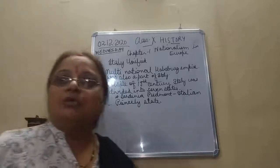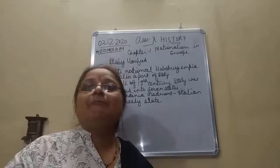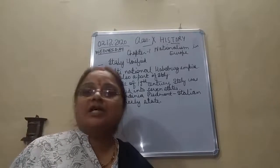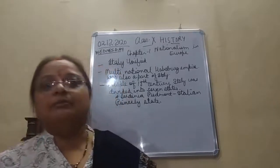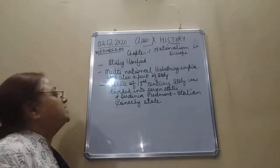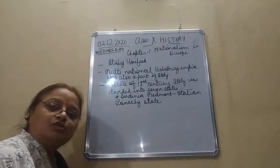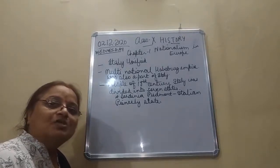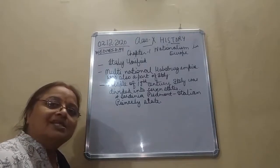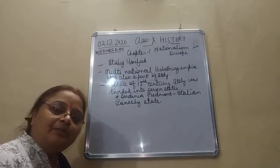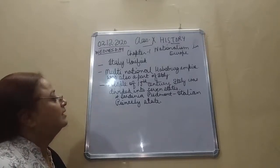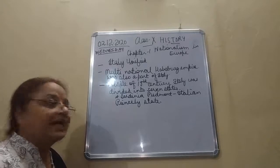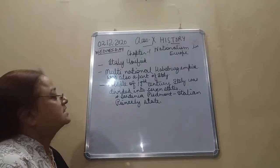What about the multinational emperors — which emperor was ruling which place? Don't miss on that. Sardinia-Piedmont was ruled by the Italian princely state.